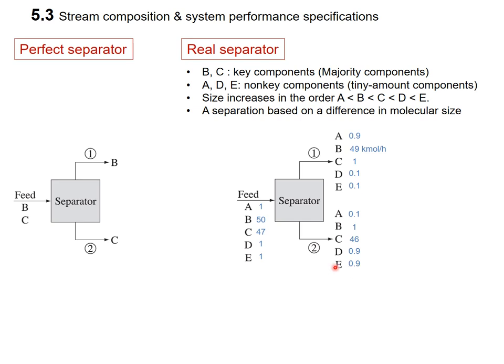This is the real situation for the separator. If you have a mixture of multiple components in the feed stream, in any output stream you cannot find 100% purity. You should check which component is dominant for a specified stream — that is the key point for real separators.